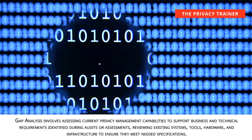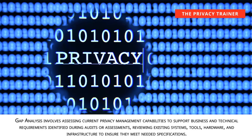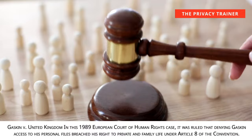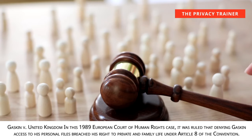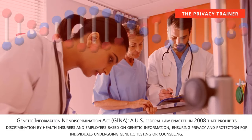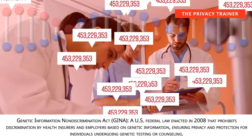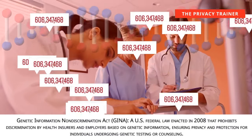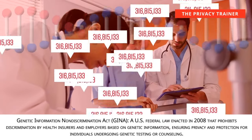Gap analysis. Involves assessing current privacy management capabilities to support business and technical requirements identified during audits or assessments, reviewing existing systems, tools, hardware, and infrastructure to ensure they meet needed specifications. Gaskin v. United Kingdom. In this 1989 European Court of Human Rights case, it was ruled that denying Gaskin access to his personal files breached his right to private and family life under Article 8 of the Convention. Genetic Information Non-Discrimination Act, GINA. A U.S. federal law enacted in 2008 that prohibits discrimination by health insurers and employers based on genetic information, ensuring privacy and protection for individuals undergoing genetic testing or counseling.